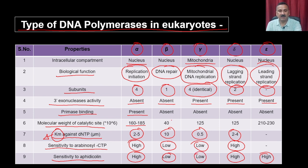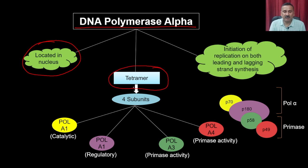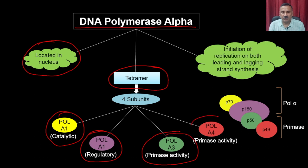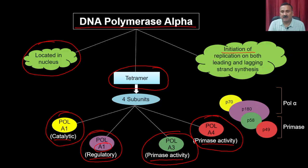Now let us discuss these DNA polymerases in detail, starting with alpha. DNA polymerase alpha is localized in the nucleus and is a tetramer with four subunits: Pol A1 with catalytic activity, Pol A2 with regulatory activity, Pol A3 with primase activity, and Pol A4 also with primase activity. This means DNA Pol alpha has both polymerase and primase activity, allowing it to synthesize the primer and then utilize that primer for DNA replication. Its function is initiation of replication on both the leading and lagging strands.